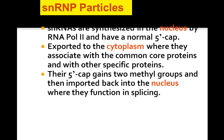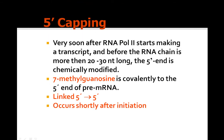5' capping occurs very soon after RNA polymerase 2 starts making a transcript and before the RNA chain is more than 20 to 30 nucleotides long. The 5' end is chemically modified: 7-methylguanosine is covalently added to the 5' end of pre-mRNA.